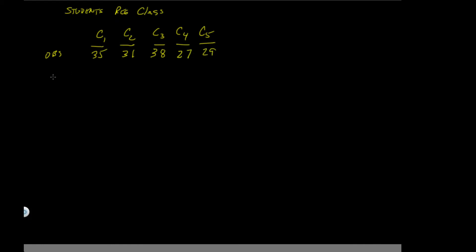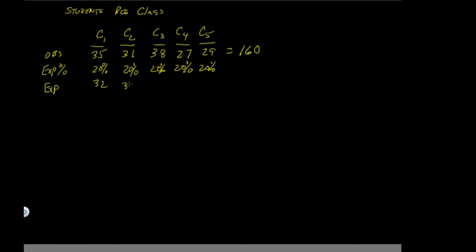So it really doesn't look even. But what we would expect, if they're all even, is that each class should have 20%. If we take the total number of students, we have 160. Therefore, the expected number of students in each class is 32. When we look at these numbers, they're really not that far off, but I'm not sure if this is what we would truly expect in terms of statistical equivalence between each of these classes.